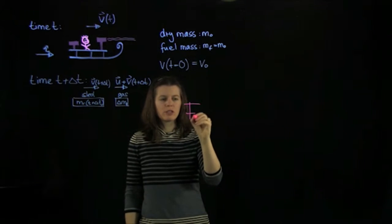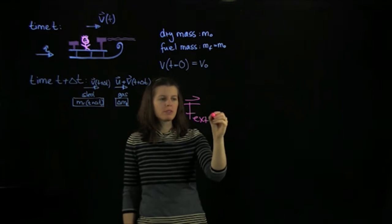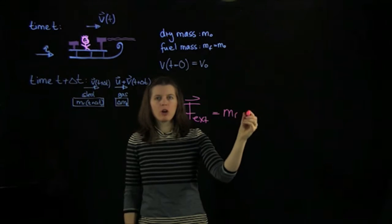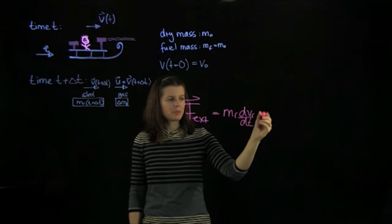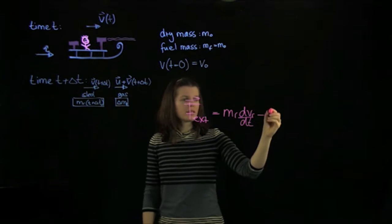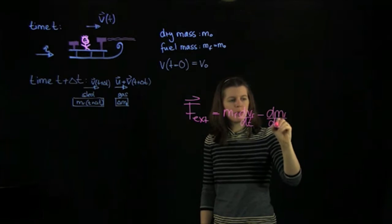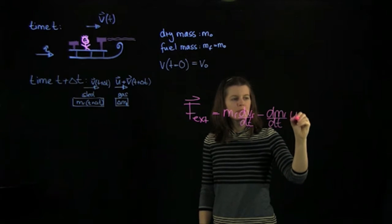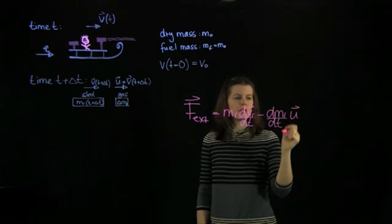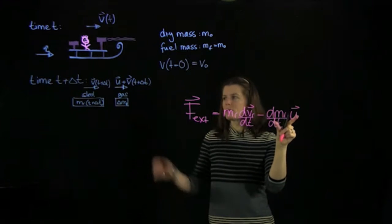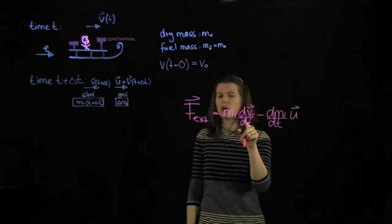The rocket equation says that my force, my external force, has two terms. We have the mass of the rocket times the acceleration of the sled minus the differential of the mass times the speed u. And these are actually all vectors. And so this describes this little gas parcel here, and this one describes the rocket.